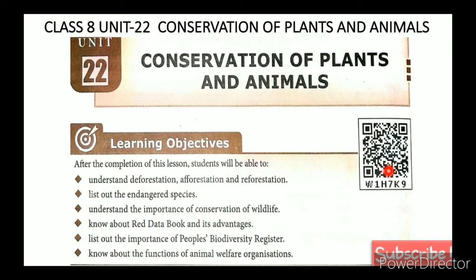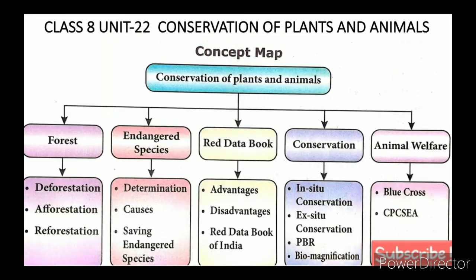Conservation of Plants and Animals has nine topics. First: Deforestation. Second: Afforestation. Third: Reforestation. Fourth: Endangered Species. Fifth: Red Data Book. Sixth: Conservation. Seventh: PBR — People's Biodiversity Register. Eighth: Biomagnification. Ninth: Animal Welfare.